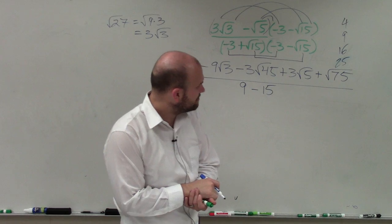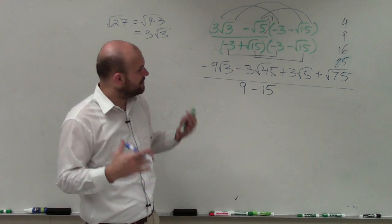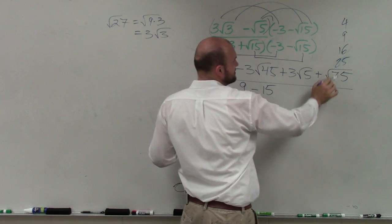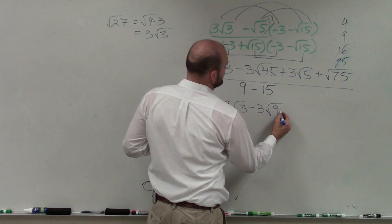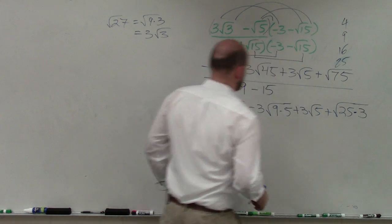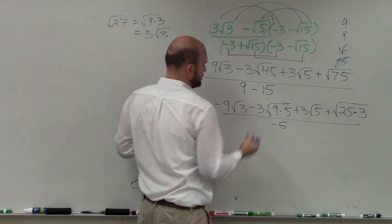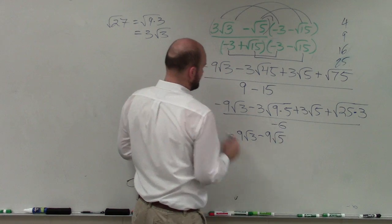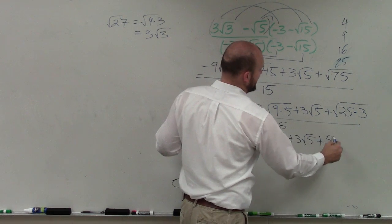Before I simplify, I want to rewrite each of my radicals in terms of the largest square number that evenly divides into them. I can see that 9 divides into 45 and 25 divides into 75. So I rewrite this as negative 9 square root of 3, minus 3 times the square root of 9 times 5, plus 3 square root of 5, plus the square root of 25 times 3 — all over negative 6. Taking the square roots: that gives negative 9 square root of 3 minus 9 square root of 5 plus 3 square root of 5 plus 5 square root of 3.